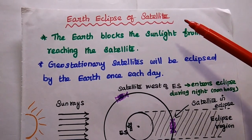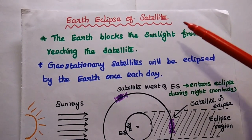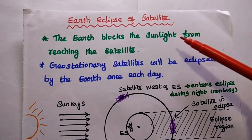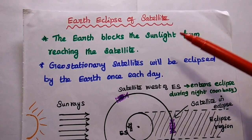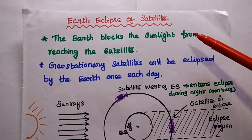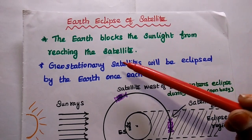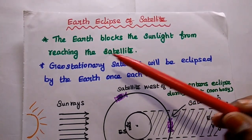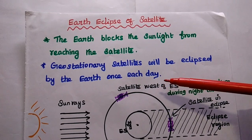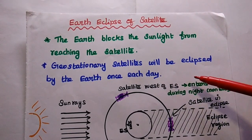Now we are going to discuss earth eclipse of satellite in detail. In general, eclipse means blocking of sunlight partially or totally. In satellite communication, during the equinoxes, the earth blocks the sunlight from reaching the satellite. That is called earth eclipse.